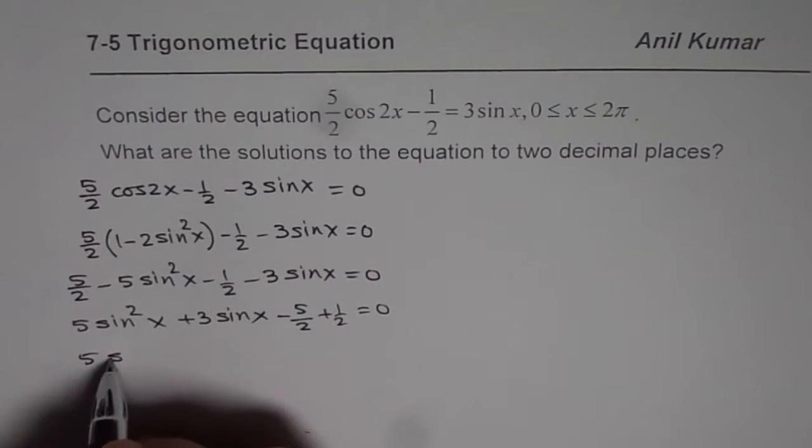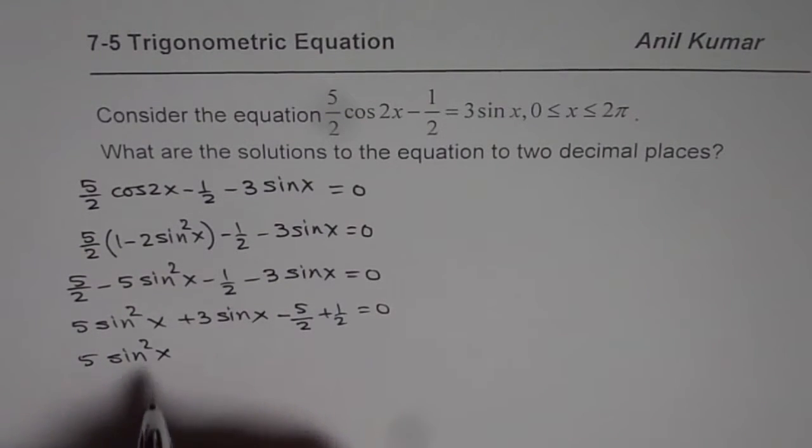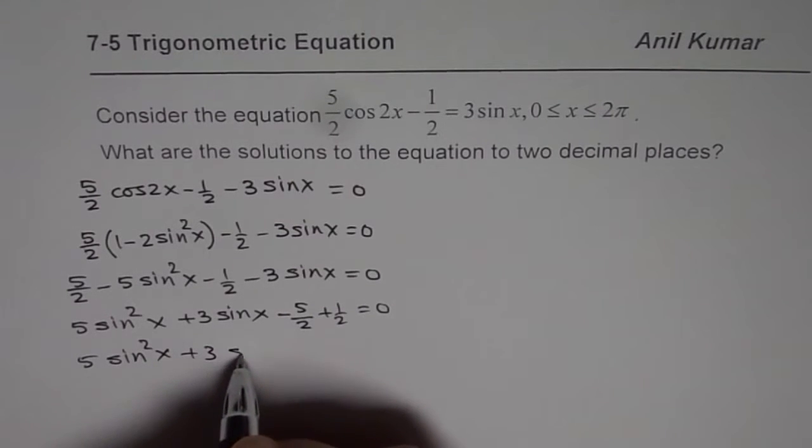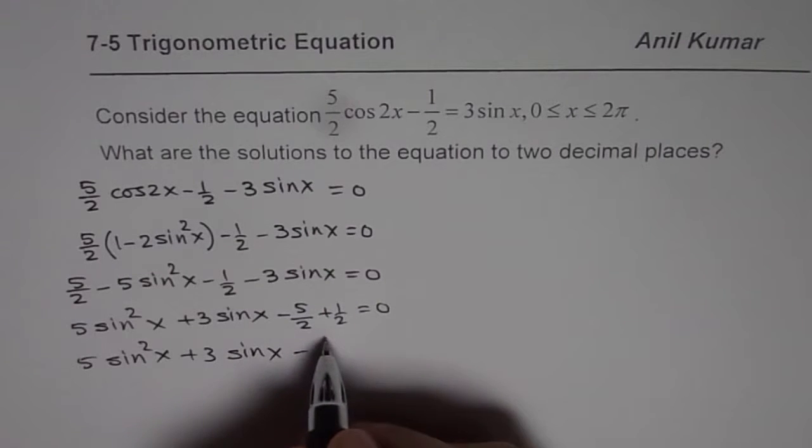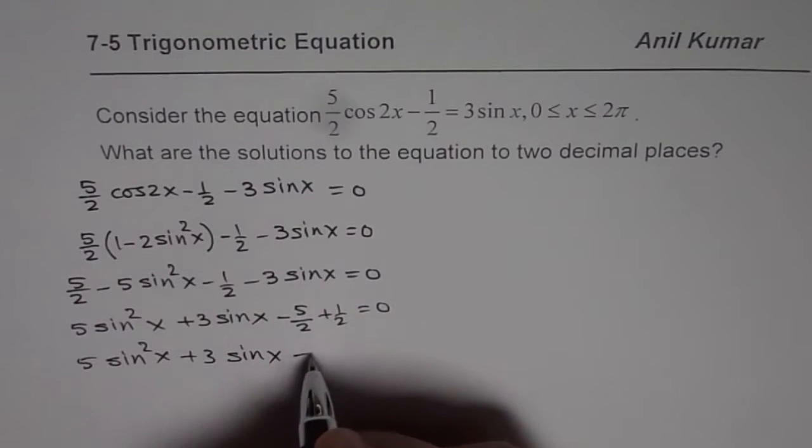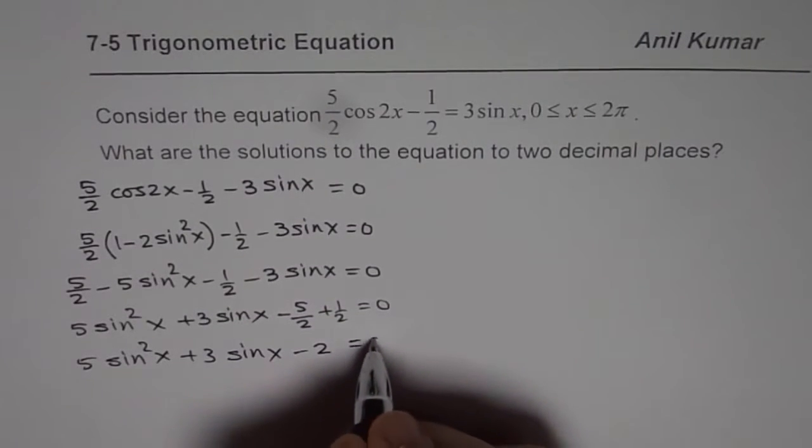Now let's combine them. So we have 5sin²(x) + 3sin(x), and here we have -4/2, which can be written as -2.